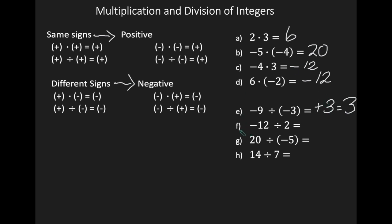Let's look at F: negative 12 divided by 2. My signs are different — my 12 is negative and my 2 is positive. When your signs are different, your result is negative. Then you divide: 12 divided by 2 is 6, so your answer is negative 6.